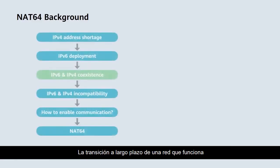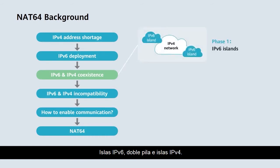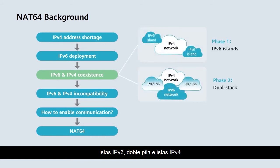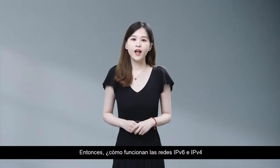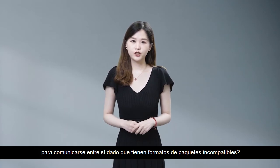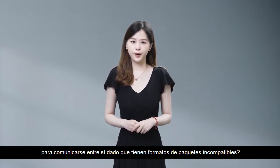The long-term transition from a network running only IPv4 to one running only IPv6 involves three phases: IPv6 islands, dual stack, and IPv4 islands. During the transition, IPv6 and IPv4 networks coexist. So then, how do IPv6 and IPv4 networks communicate with each other given they have incompatible packet formats?